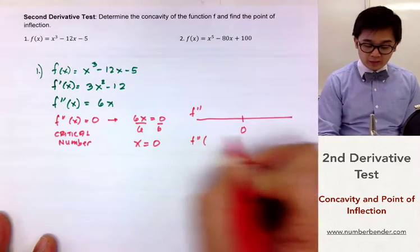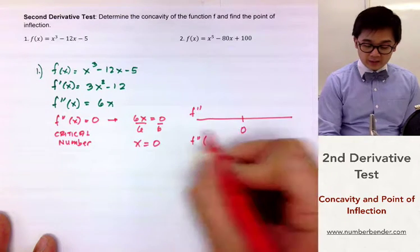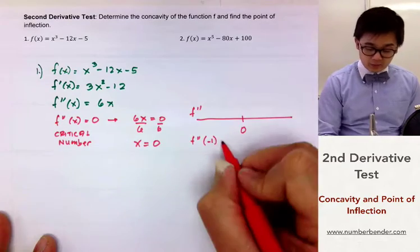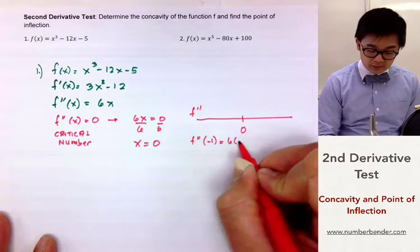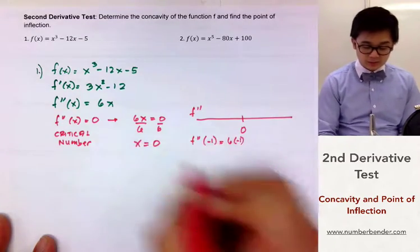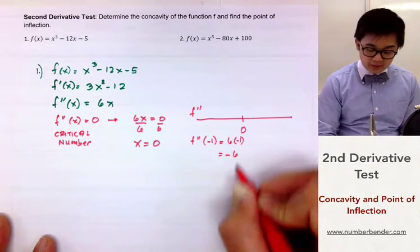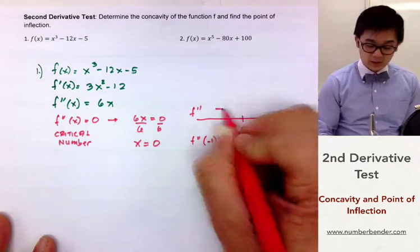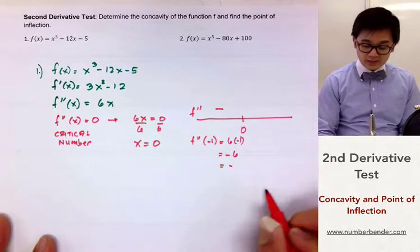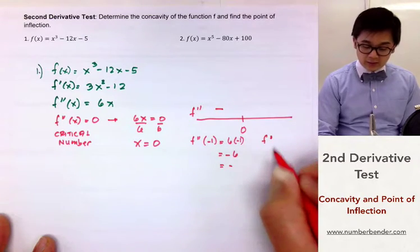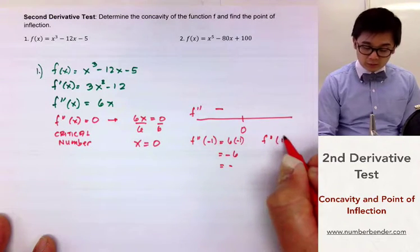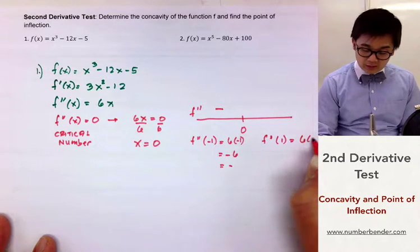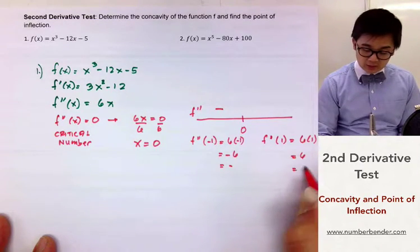We need to test a value for x. Let's use negative 1, since it is less than 0. We evaluate the second derivative: 6 times negative 1 gives us negative 6, which is a negative value. For the next interval, we use positive 1 since it is greater than 0: 6 times 1 is 6, which is a positive value.